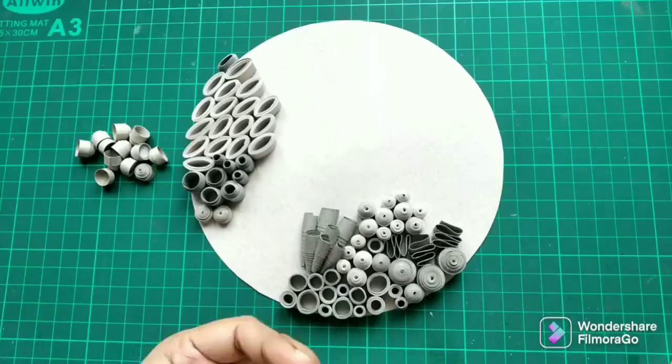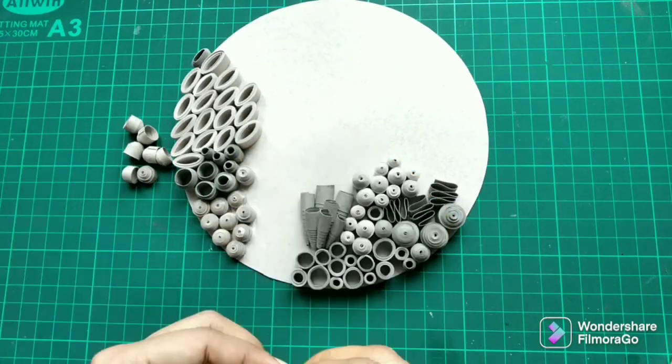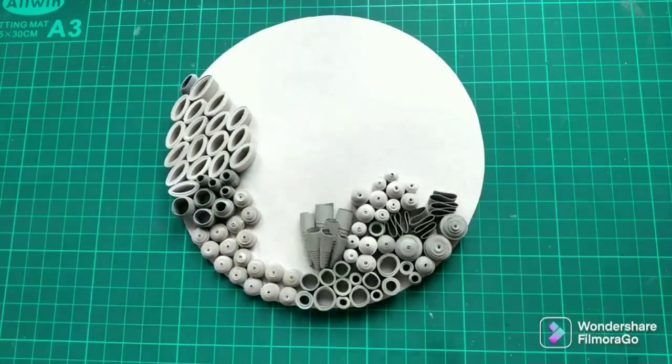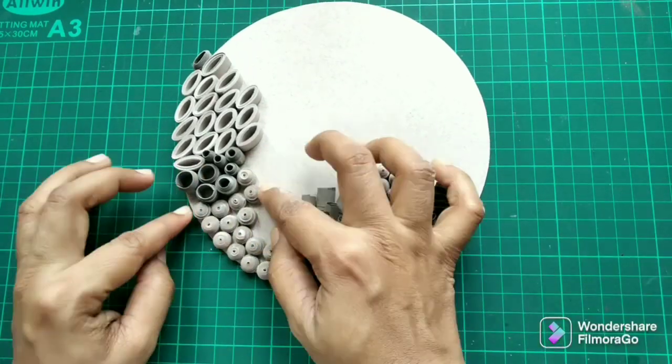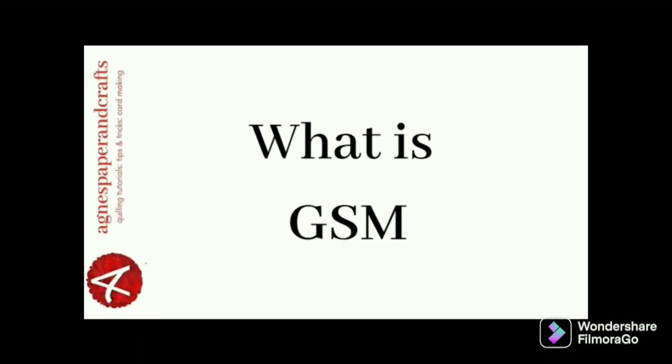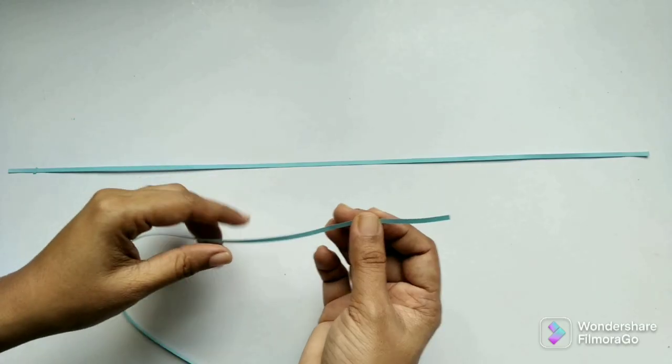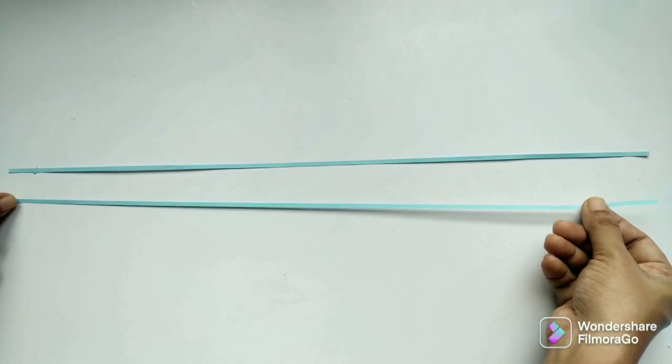Weight of paper strip is noted by GSM, which is grams per square meter. In the US, it is usually given in pounds. Based on the paper's thickness, the length of paper required will change. If you would like to know more about GSM, check this video link.